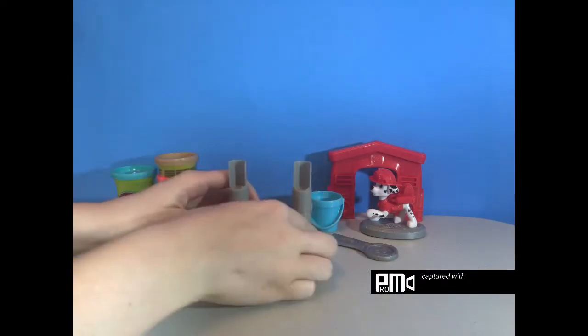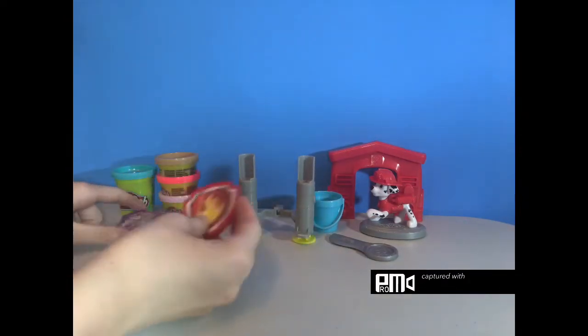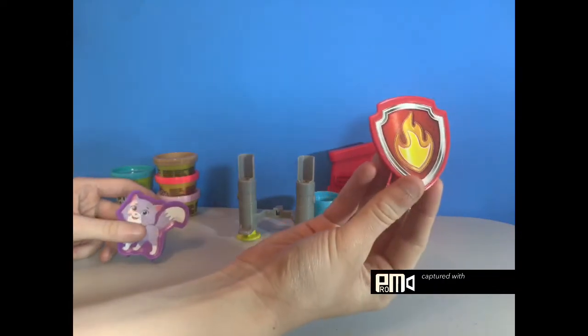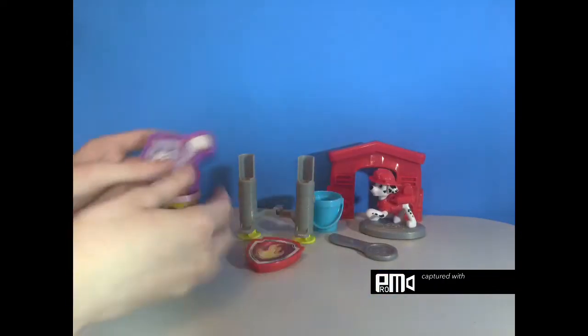Then we have two fire extinguishers that you can squeeze stuff out of. Then we have two more molds - we have a symbol right here, Marshall's symbol, and then we have Cali.